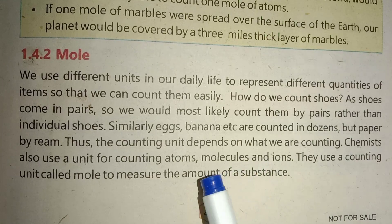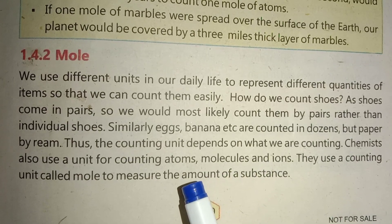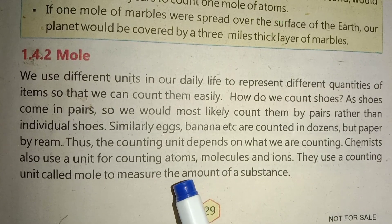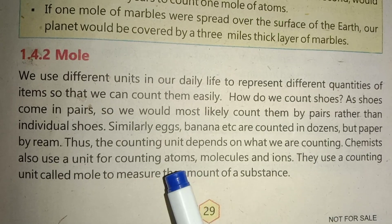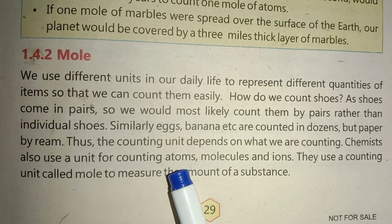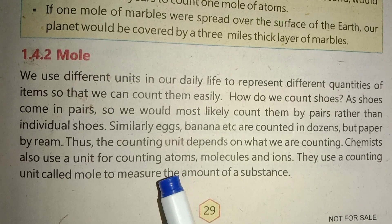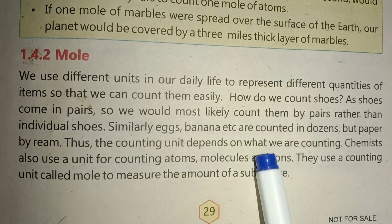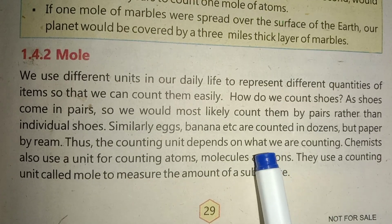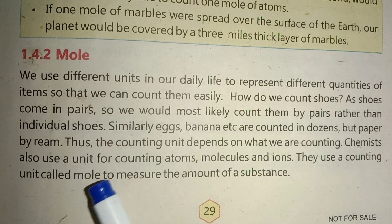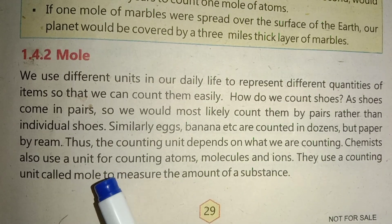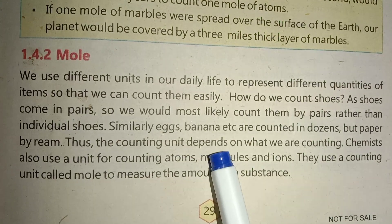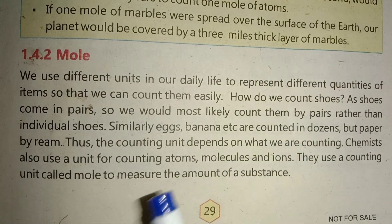In chemistry, to count very small items like atoms, molecules, and ions, we use a specific unit. That unit is the mole. One mole means a fixed number of items. One mole of atoms, one mole of molecules, one mole of ions — the mole is the fixed counting unit used in chemistry.